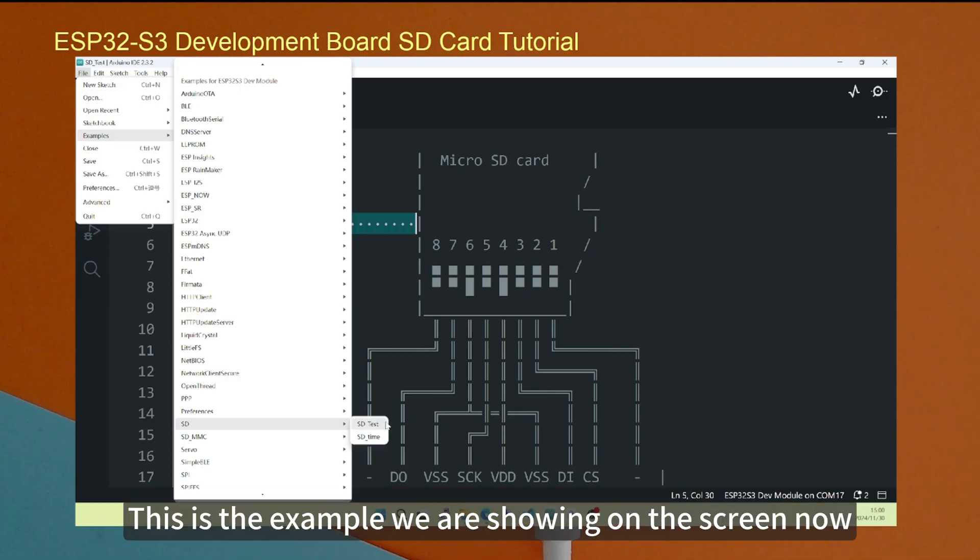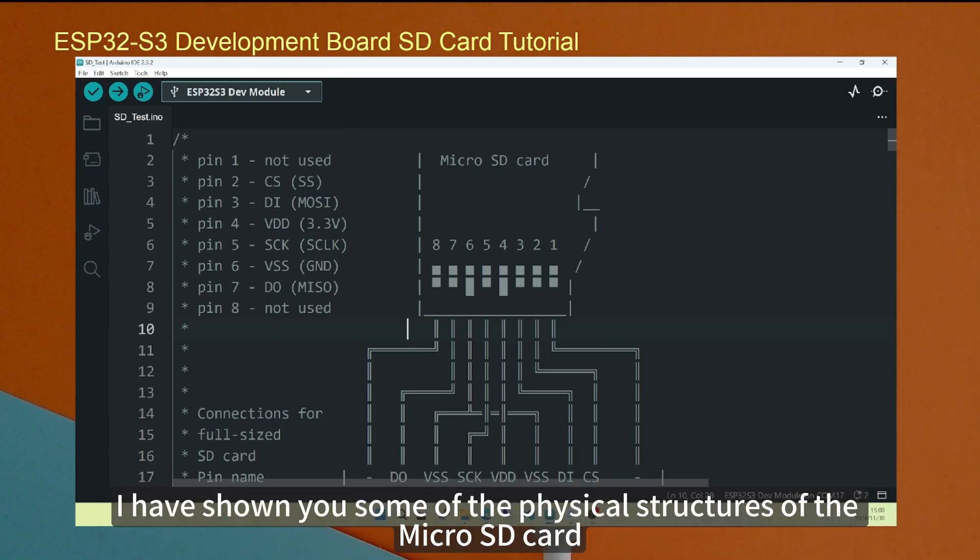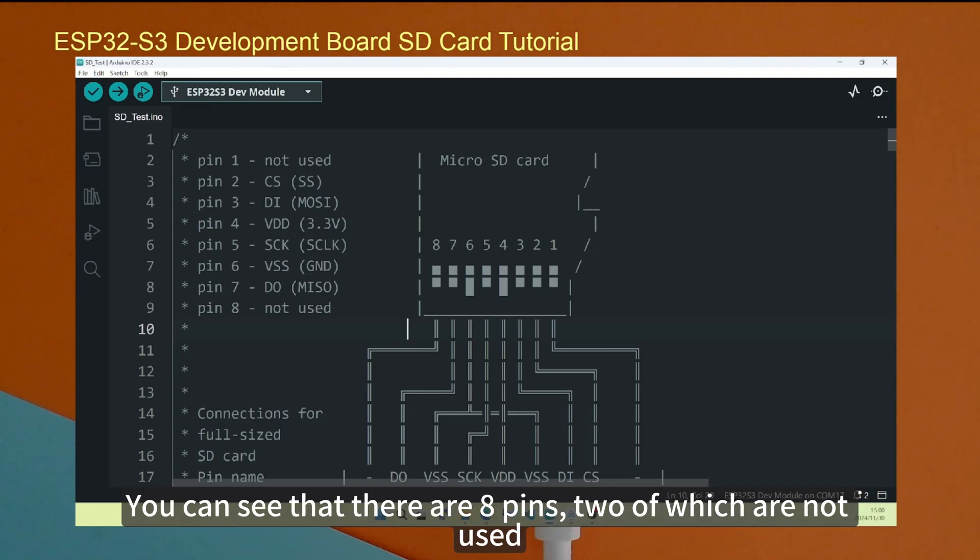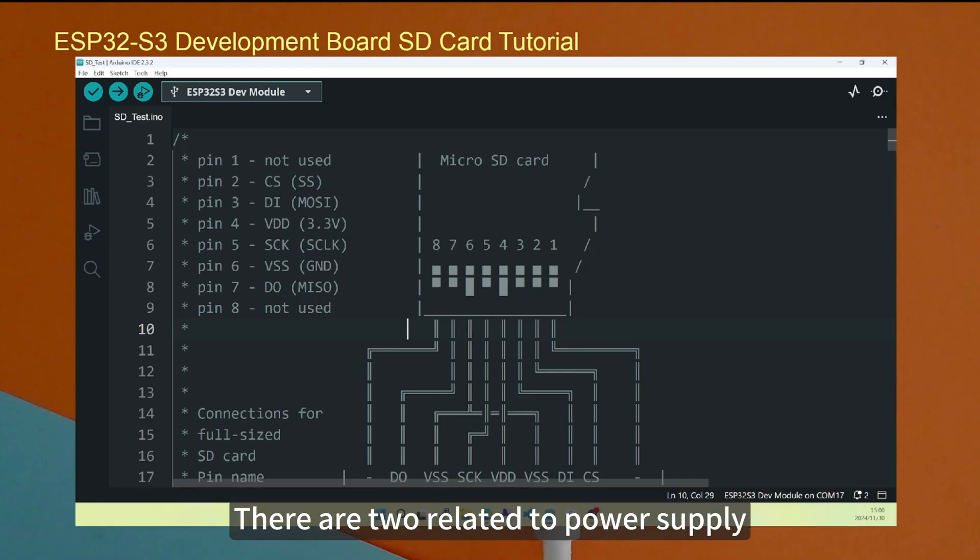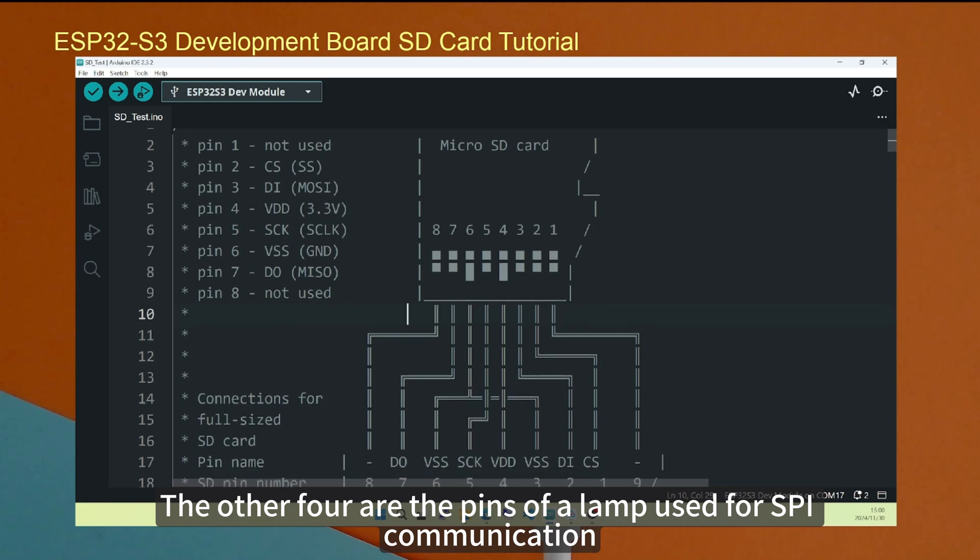This is the example we are showing on the screen now. This example is in the comments. I've shown you some of the physical structures of the micro SD card. You can see that there are eight pins, two of which are not used. There are two related to power supply. The other four are the pins used for SPI communication.